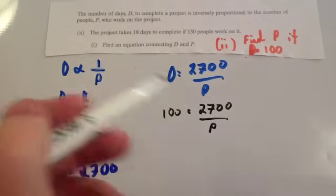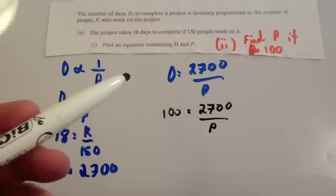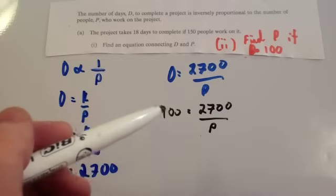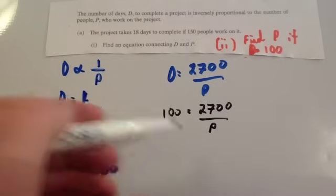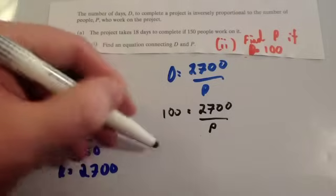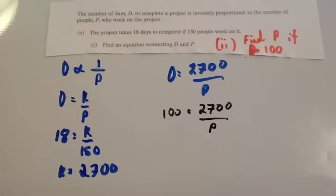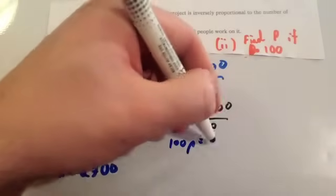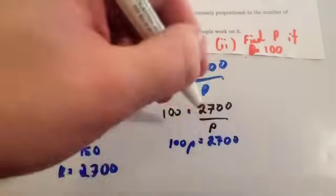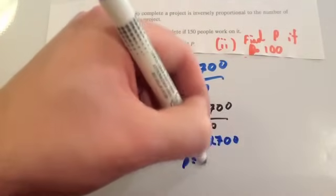So, I suppose you can think about this in two ways. You can either divide it by just 27 to get 100. So, P is equal to 27. Or you could multiply both sides by P to get 100P equals 2,700. Then divide by 100 to get P equals 27.